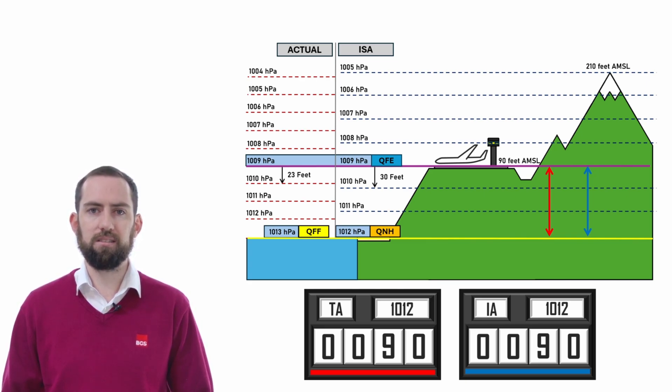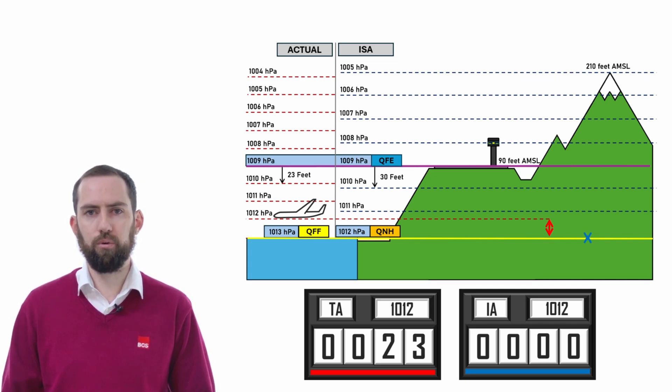You'll notice on the diagram that this pressure level is not at sea level, and so your altimeter would be reading 0 whilst you were still hovering somewhere above the water. In which case, if you set the QFF on the altimeter, then your altimeter would read 0 upon reaching the 1013 level on landing.